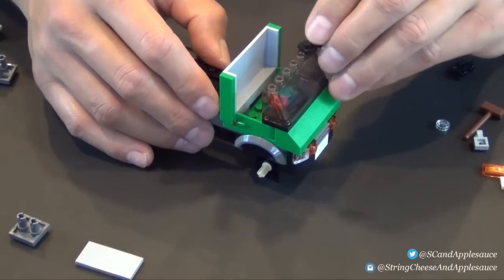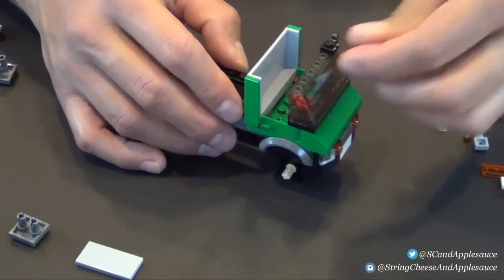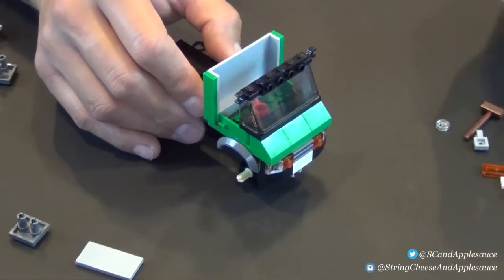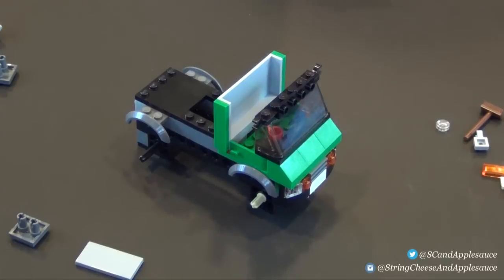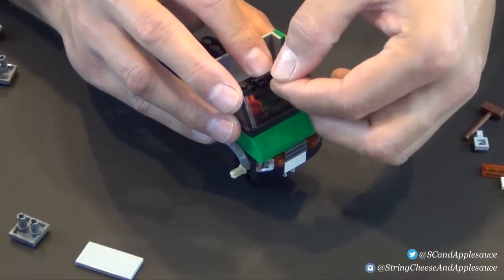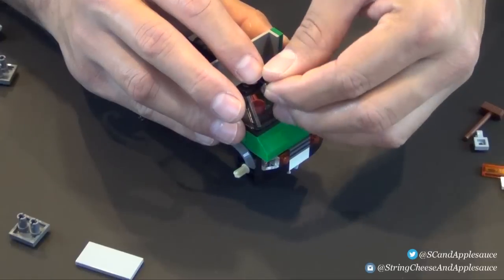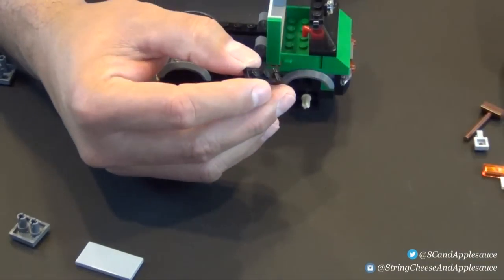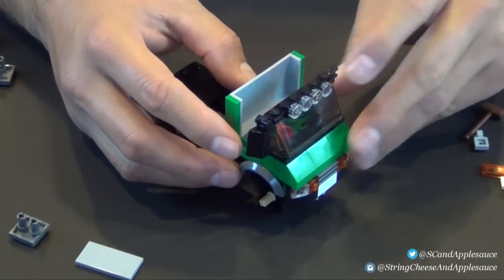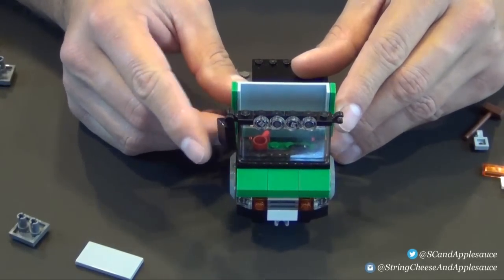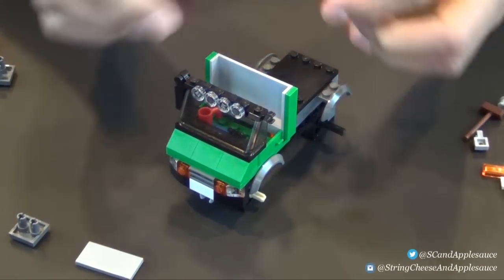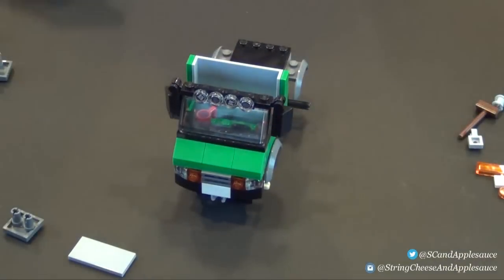Next is some modified plates with clips on the side, and a couple modified plates with studs on the side there. Some 1x1 clear round tiles, those are our light bar on the front here. Next is a couple rear view mirrors, they're attached to those plates. You see it attaches and you fold it down, that creates the illusion of a rear view mirror. We have one on each side, that's our rear view mirrors.